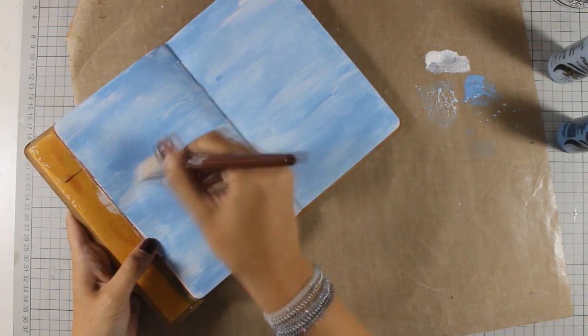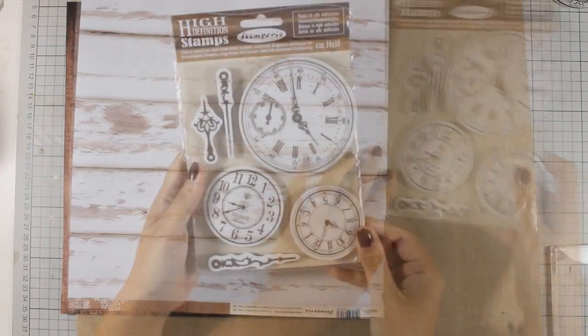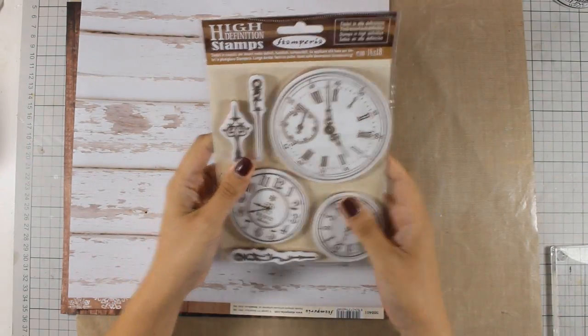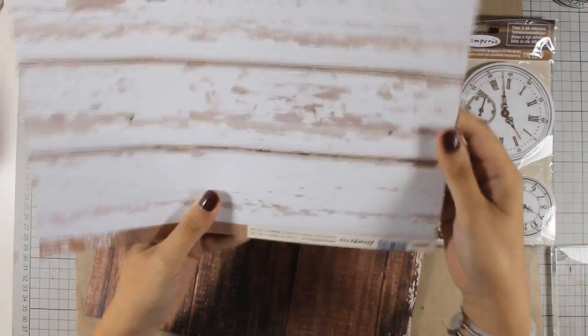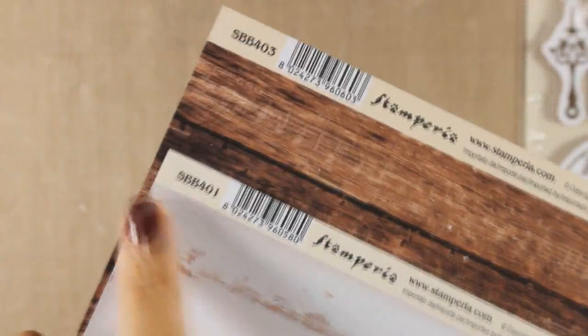So once I'm happy with my background I am going to go ahead and use my heat gun to speed up the drying process and this is the final result. I am going to put that aside for now and I'm going to show you the stamp set and the two pattern papers that I will be using.